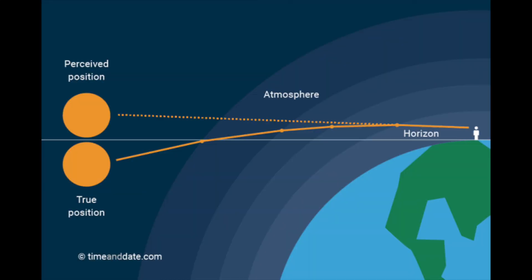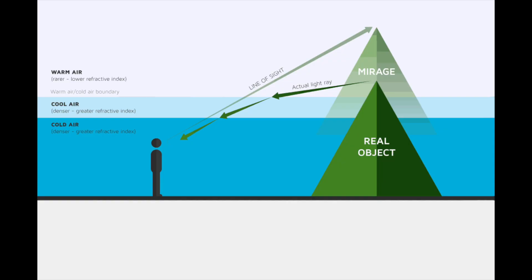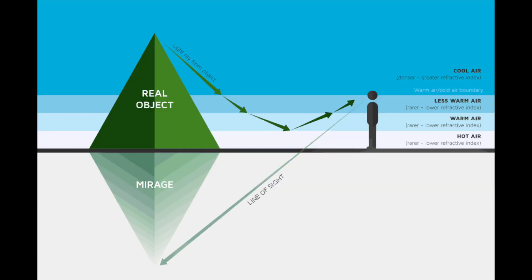Science tells us that light bends towards air that is more dense. When looking towards the horizon, this generally bends the light down because air is less dense as you get higher. If there are large changes in temperature, this can change things. Low cold air bends the light down more. Low warm air will bend the light upwards, sometimes creating mirages.